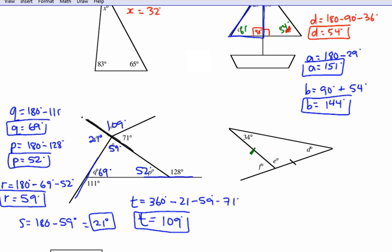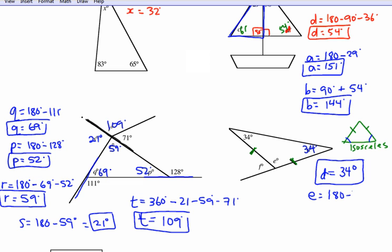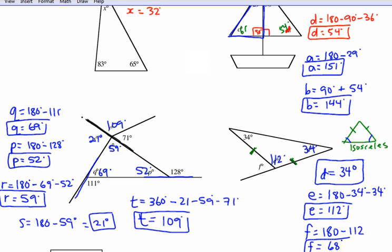Tick marks on sides mean they are equal. When two sides are the same, that's an isosceles triangle, and two opposite angles are also the same. So d equals 34 degrees because it's an isosceles triangle. We can find e because the triangle adds to 180: 180 minus 34 minus 34, giving 112 degrees. Then f makes a straight line with 112, so f equals 180 minus 112, which is 68 degrees.